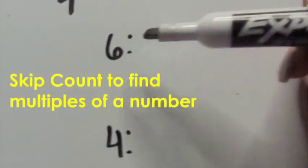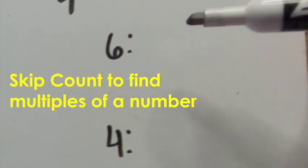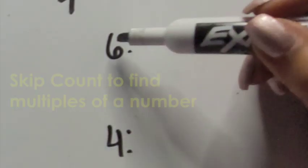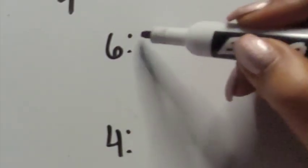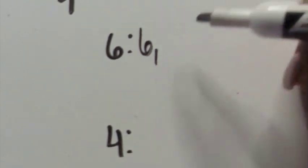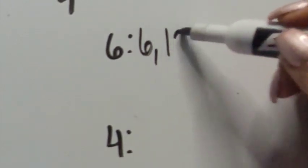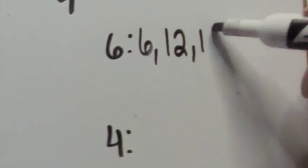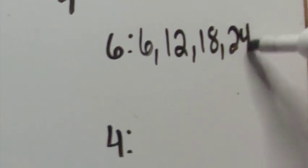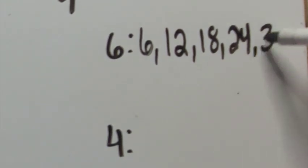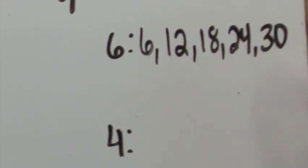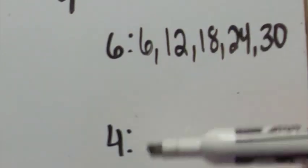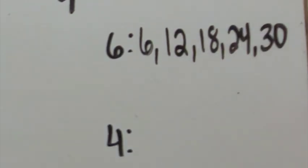Skip count by six to determine what are the multiples of six: six, twelve, eighteen, twenty-four, thirty. We can go beyond that, but we're going to stop there and see what multiples they have in common.